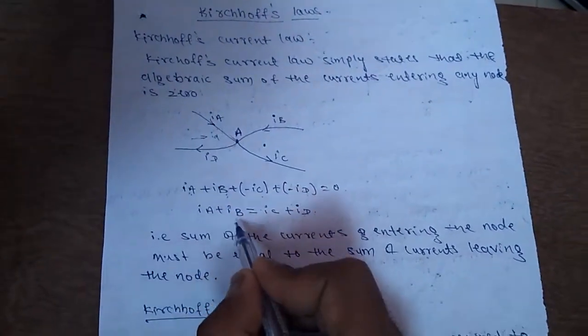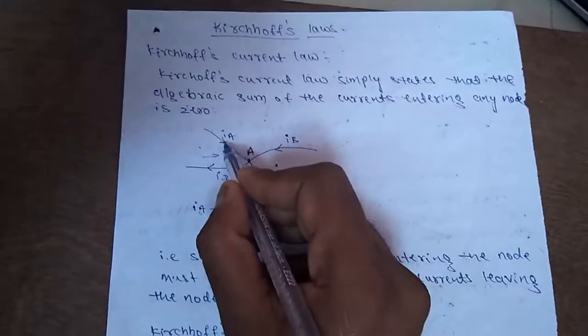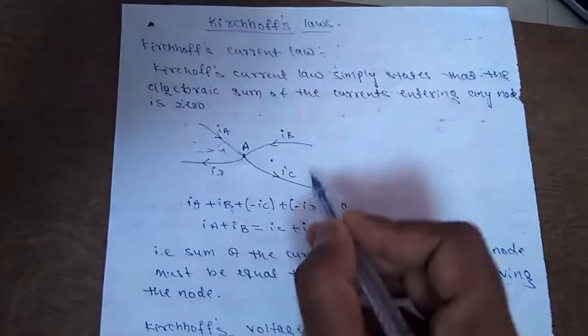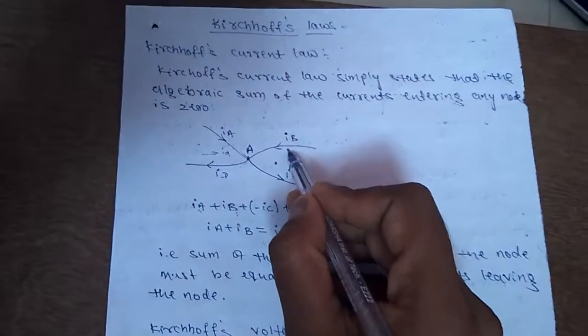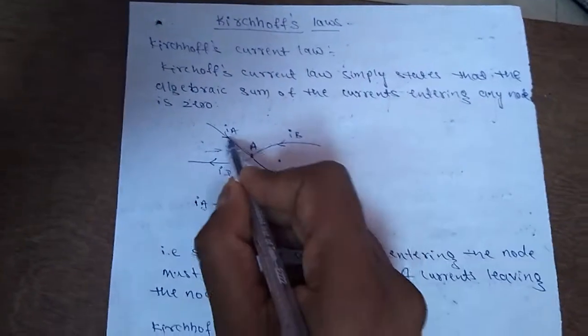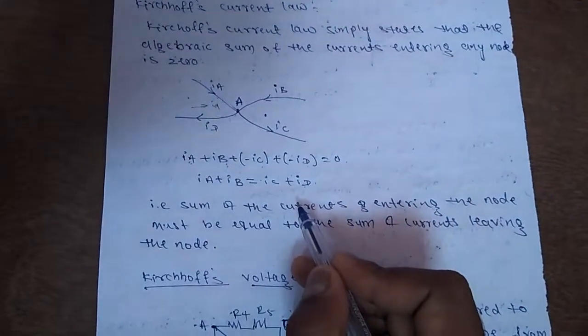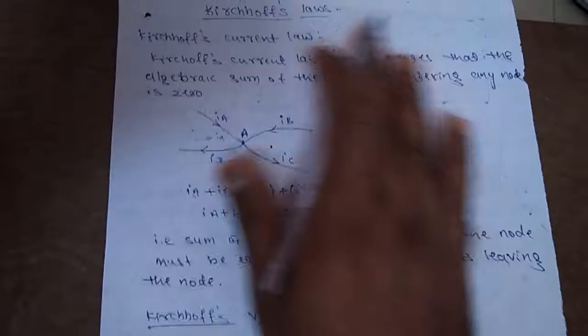So, that I can write as IA plus IB will be equal to IC plus ID, which means that the sum of the entering currents, that is, here IA and IB are entering, and IC and ID are leaving. The sum of entering currents, algebraic sum of entering currents, will be equal to the sum of leaving currents. This is what Kirchhoff's law.